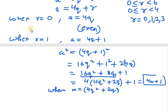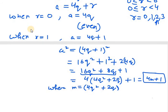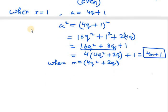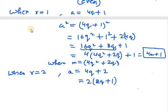Now we need to check when r equals 2. When r equals 2, a becomes 4q plus 2. If I take 2 out, we are left with 2 times 2q plus 1. In this case we don't need to square the term because it's very clear that the number would be even, since it's divisible by 2.